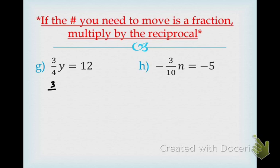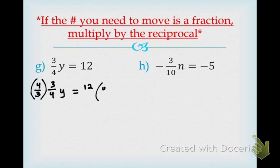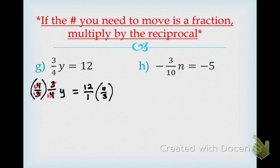When you're trying to get rid of a fraction, flip it — put the reciprocal next to it. Rule number 3 says what you do to one side, you must do to the other. I had a 12 here, so I have to multiply it by the same thing — 4/3. What happened to 4/3 times 3/4? It becomes a 1, and you're just left with y. Is there anything I can cancel on the right side? Yes — 3 and 12, because 3 goes into 12 four times.